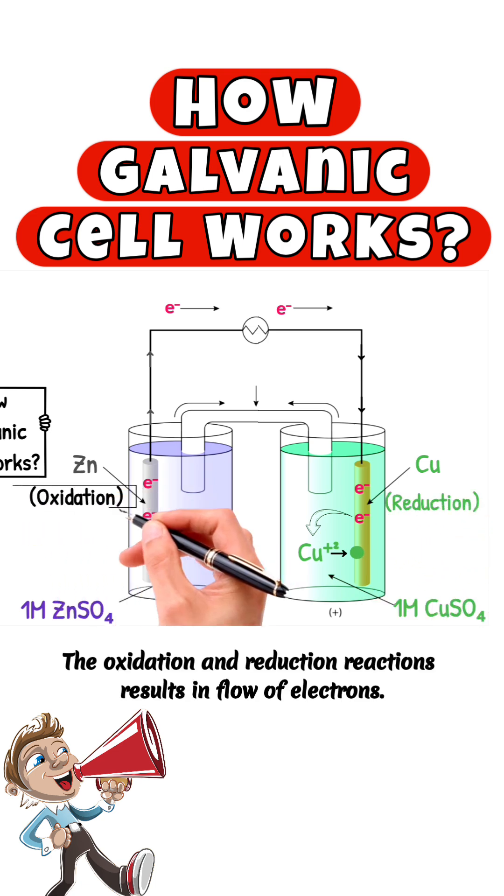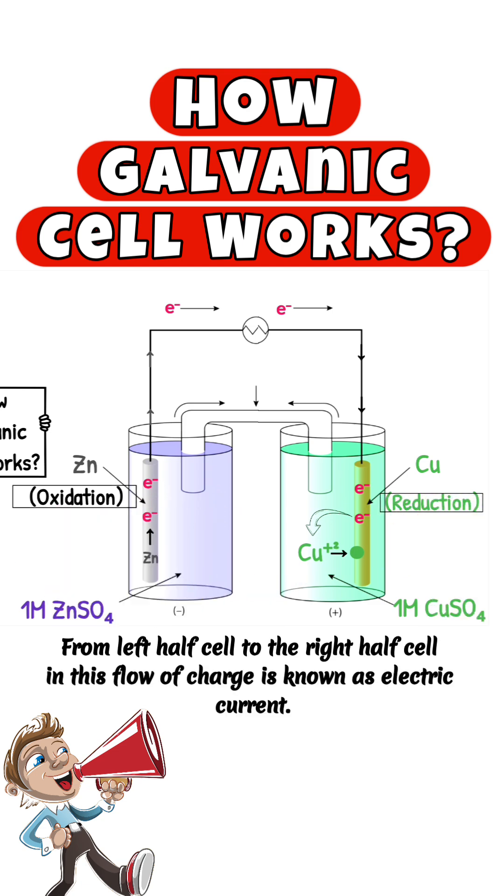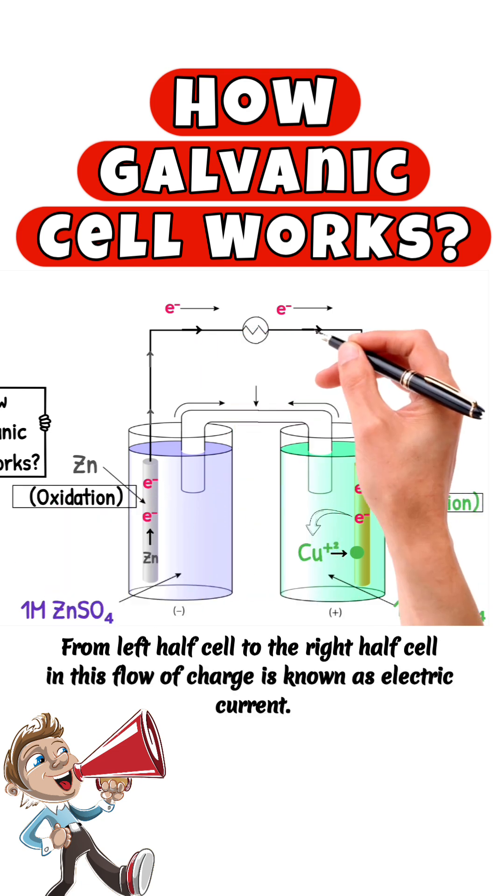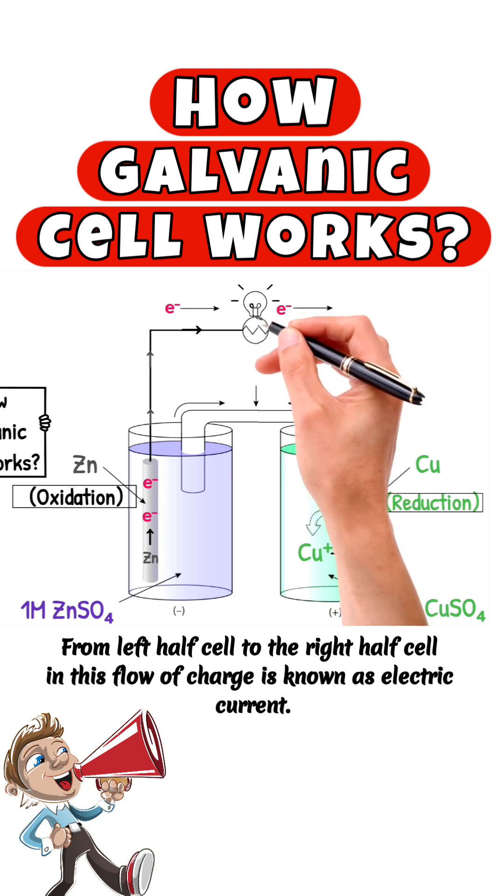The oxidation and reduction reactions result in flow of electrons from left half cell to the right half cell. This flow of charge is known as electric current.